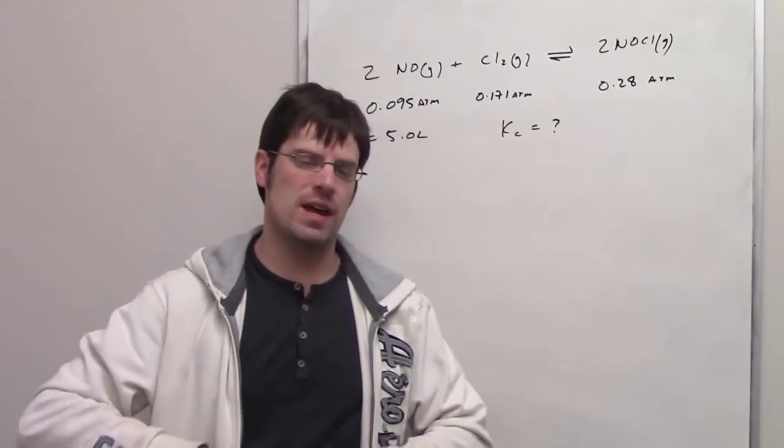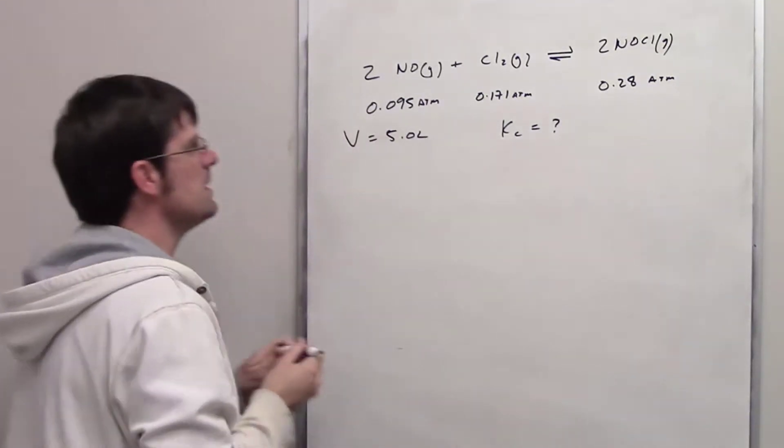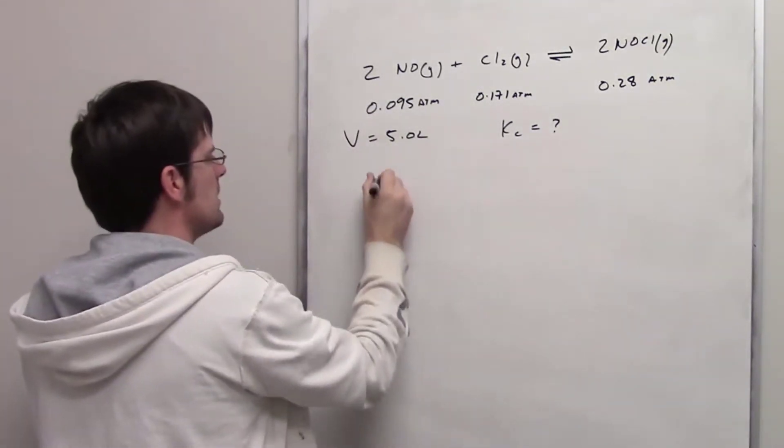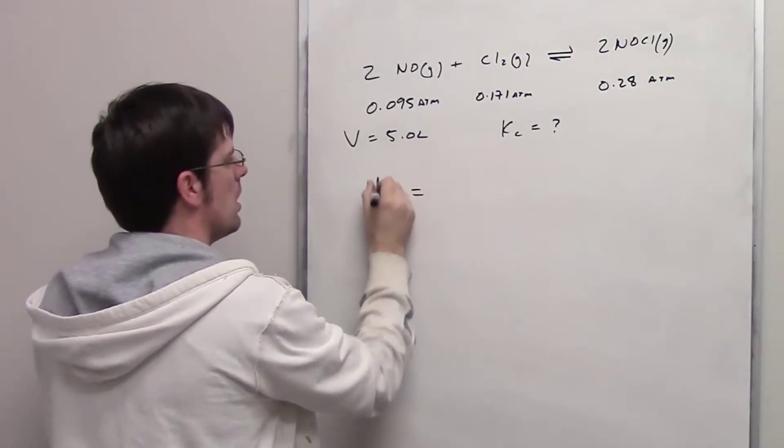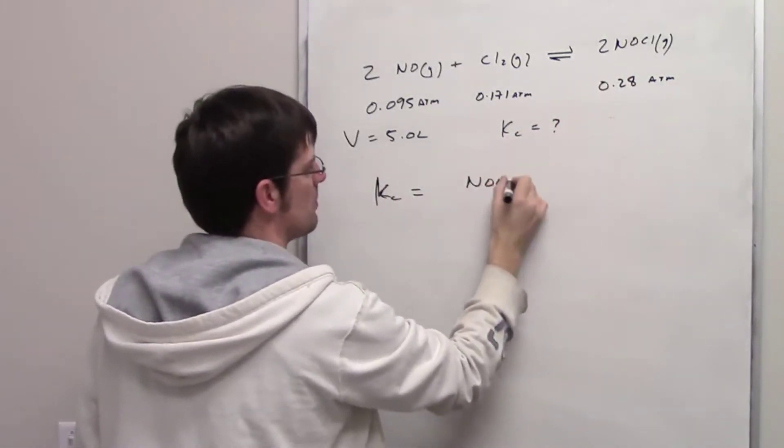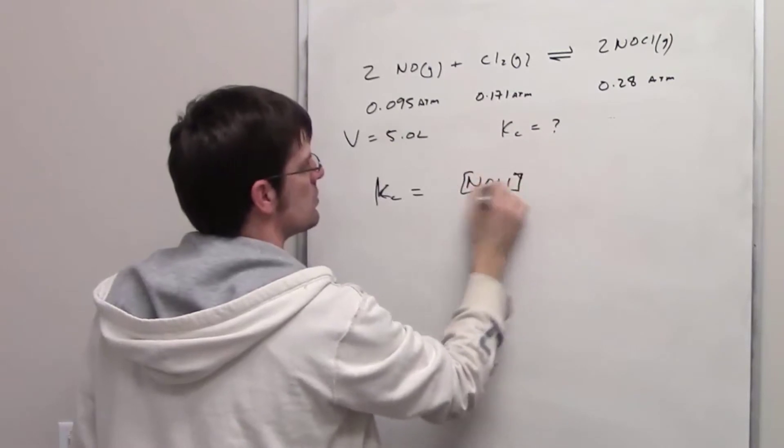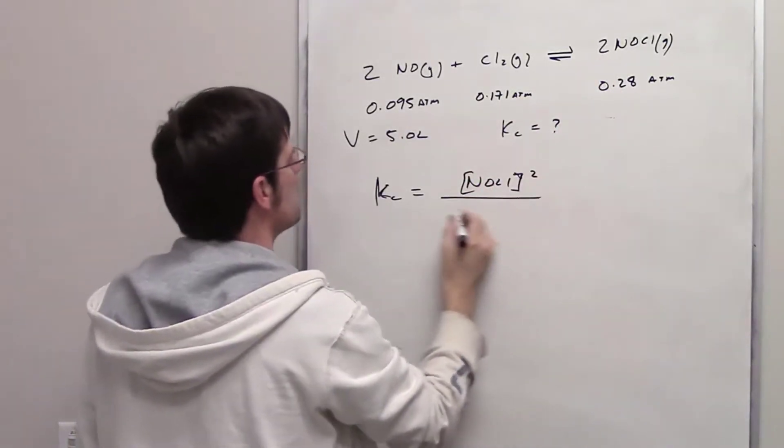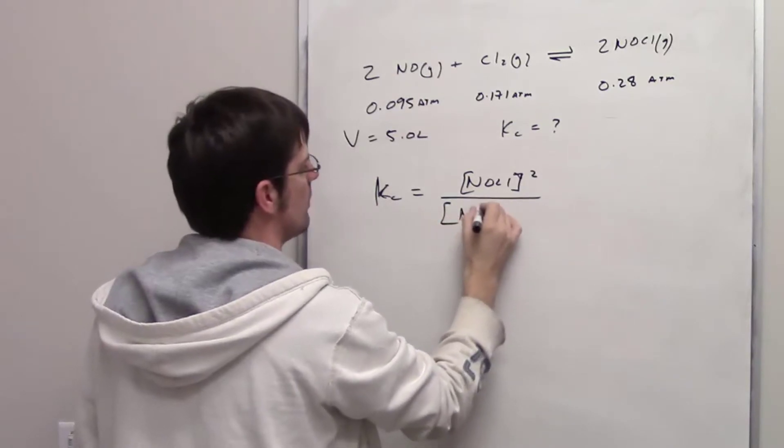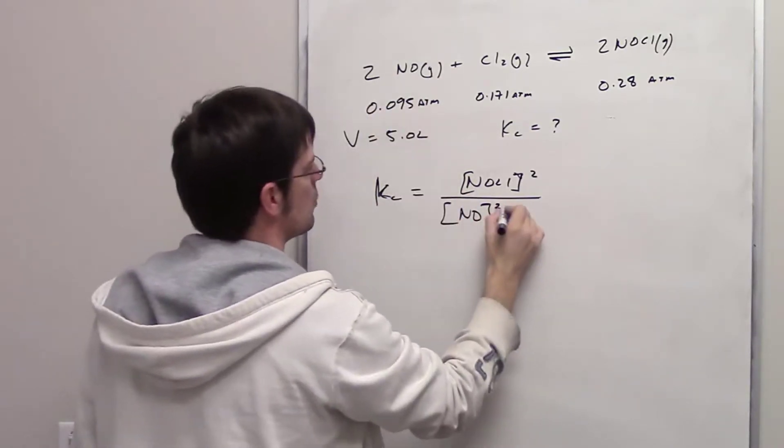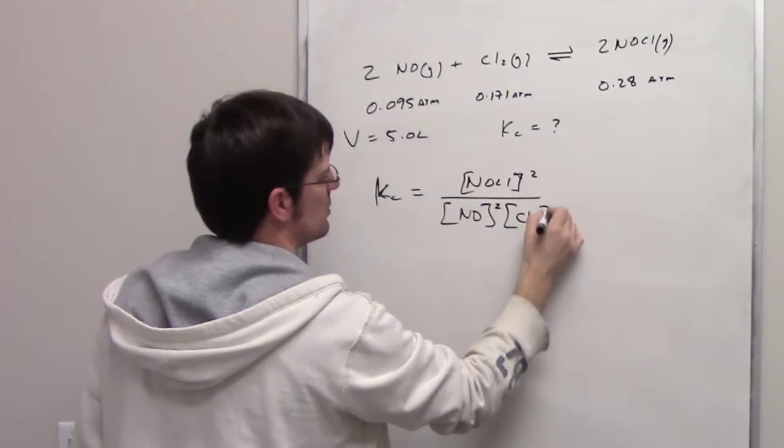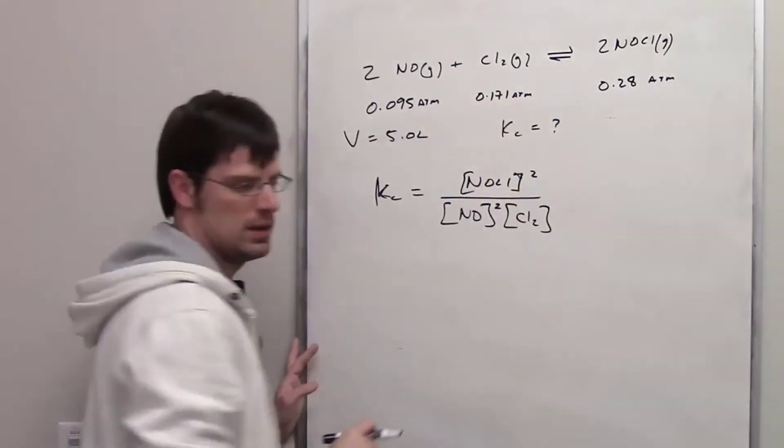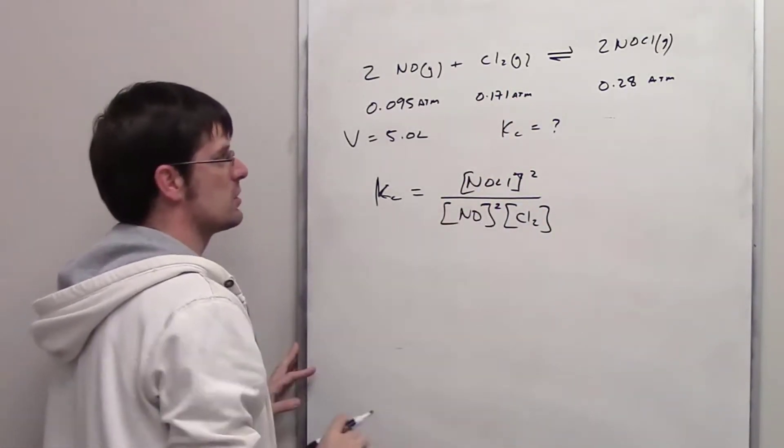Let's see if we can figure that out. Kc, as we look at this, is of course going to be equal to the concentration of the product squared, because the number 2 is the coefficient here, it becomes an exponent divided by the concentrations of the reactants, in this case NO squared, multiplied by the concentration of Cl2 to the first power. How do we determine what those concentrations are?